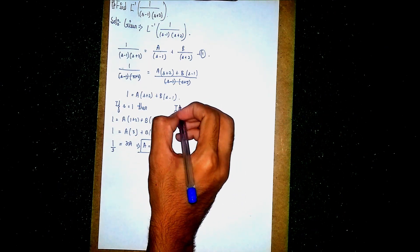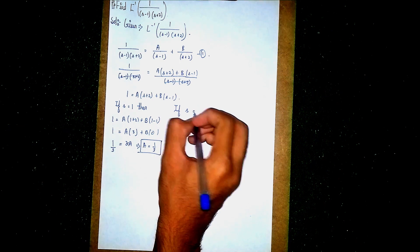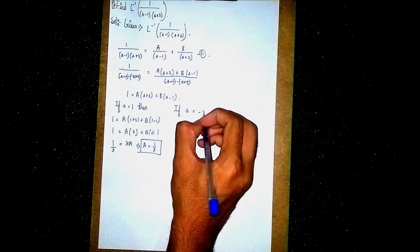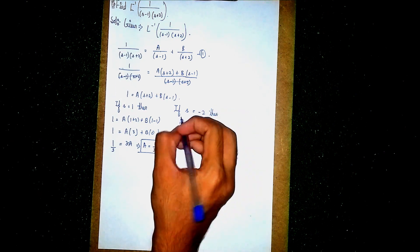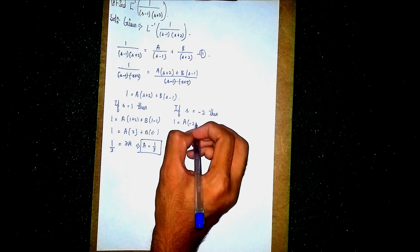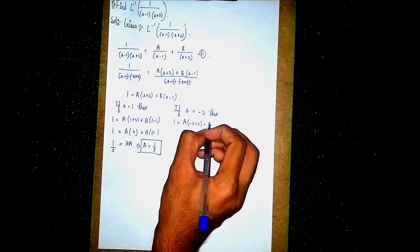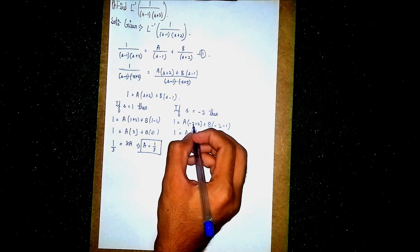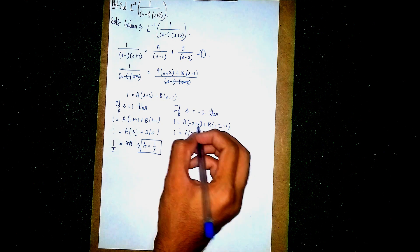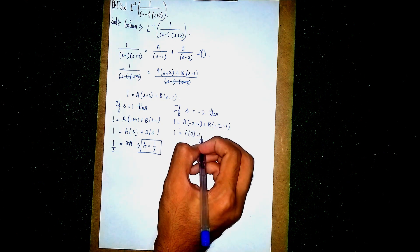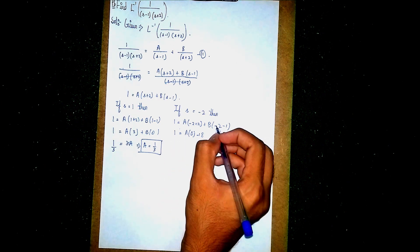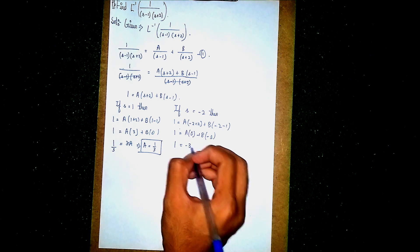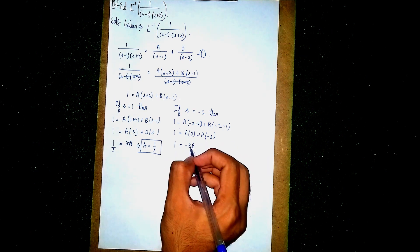Now to find B, to eliminate A we take s equal to minus 2. Substituting: 1 is equal to A into (minus 2 plus 2) plus B into (minus 2 minus 1). So 1 equals A into 0 plus B into minus 3.